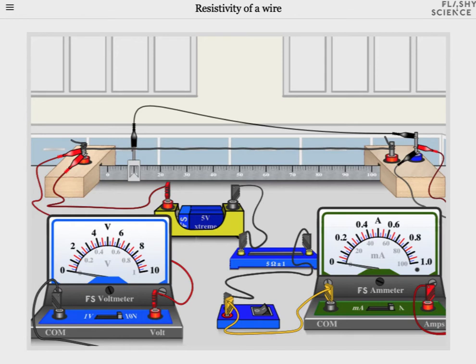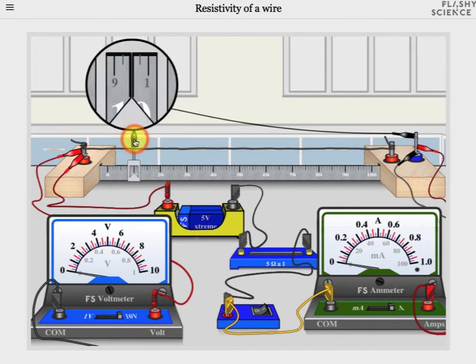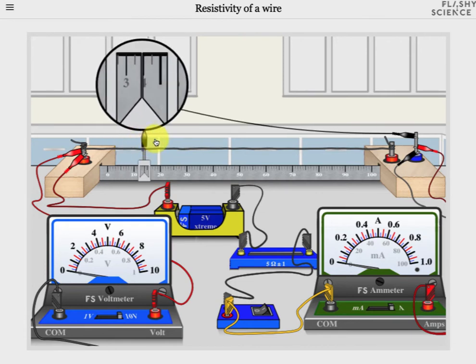Welcome to the video guide of the FlashyScience Resistivity of a Wire Experiment. The screen shows a conductive wire held between these two posts. The wire has a crocodile clip contact that can be repositioned by clicking and dragging it left and right.